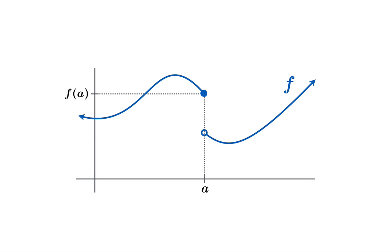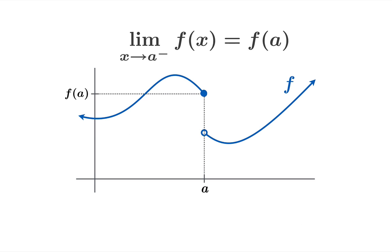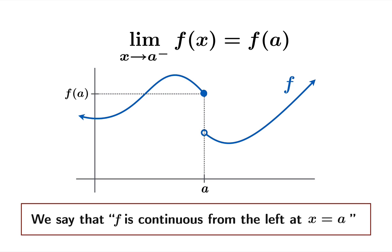This example is subtly different. In this case the limiting value as you approach a from the left matches the function value f of a, and we would say that f is continuous from the left at the argument a.